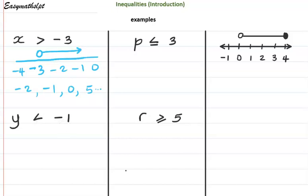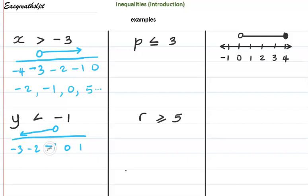y is less than negative 1. Let's do our number line. We must have negative 1 because that's our focus digit. Let's have negative 3, negative 2, negative 1, 0, and 1. My circle is going to be above my focus digit, which is negative 1. Because it says y is less than negative 1, my arrow needs to be going below the negative 1. So can y be negative 1? No, because it must be less than negative 1. It could be negative 2, negative 3, negative 4, and so on. It cannot be anything in the positive direction.